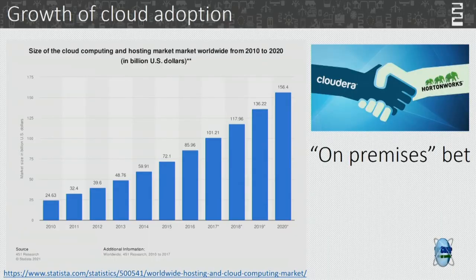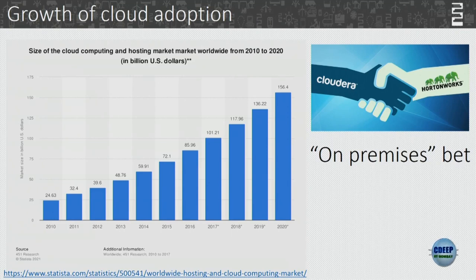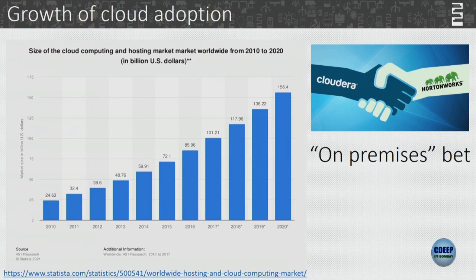Another thing is cloud adoption — if you look at the last decade from 2010, it really went up. But companies like Cloudera and Hortonworks didn't make any profit because they bet on on-premise cloud. Their assumption was that banks and others would not go to AWS or Google Cloud for security reasons. But people started moving to AWS-kind cloud no matter what.